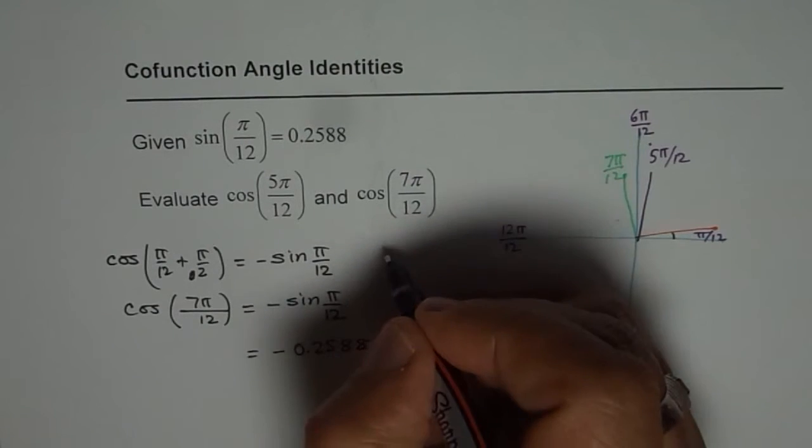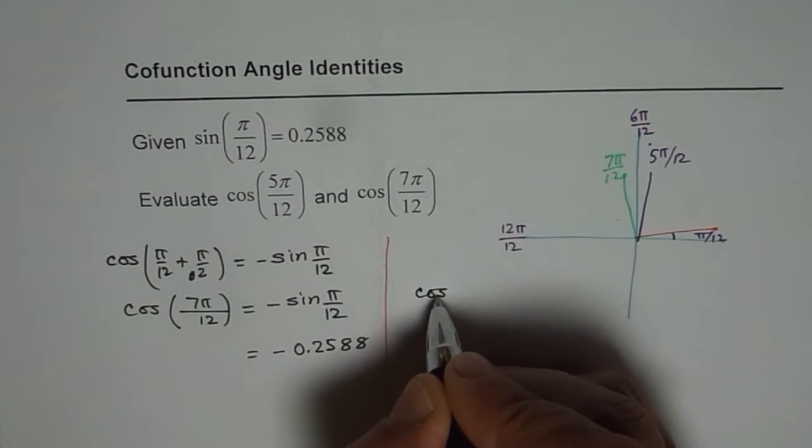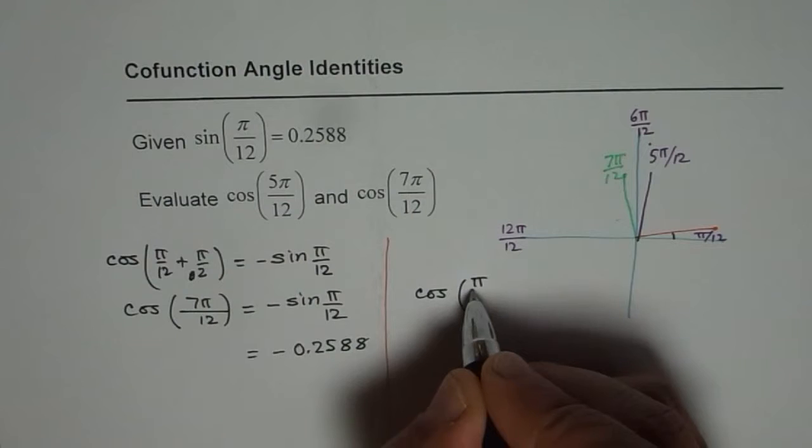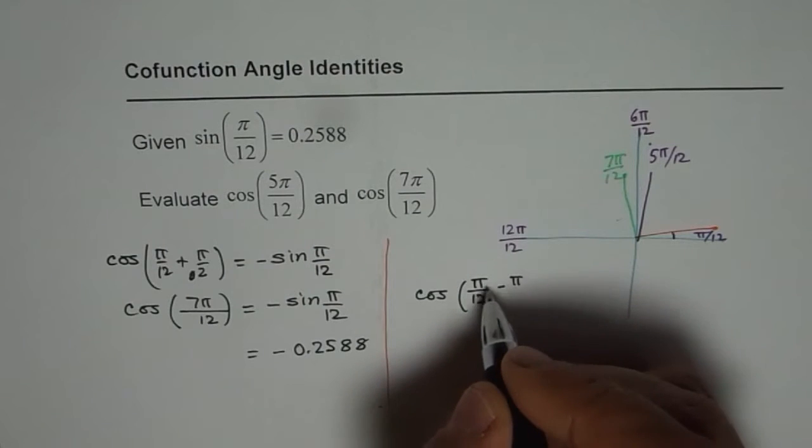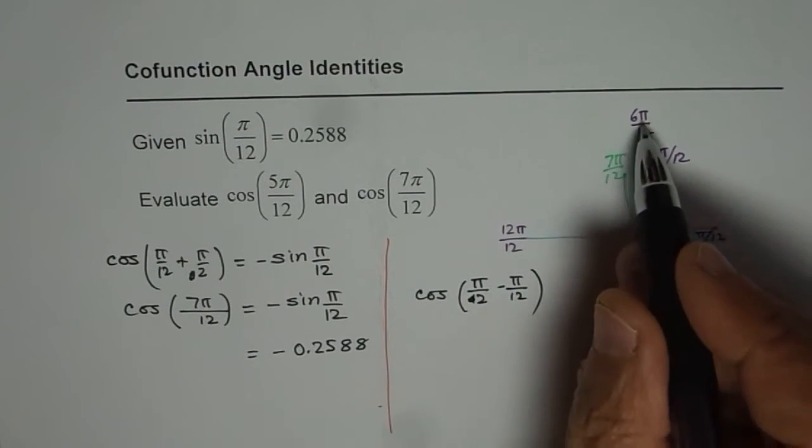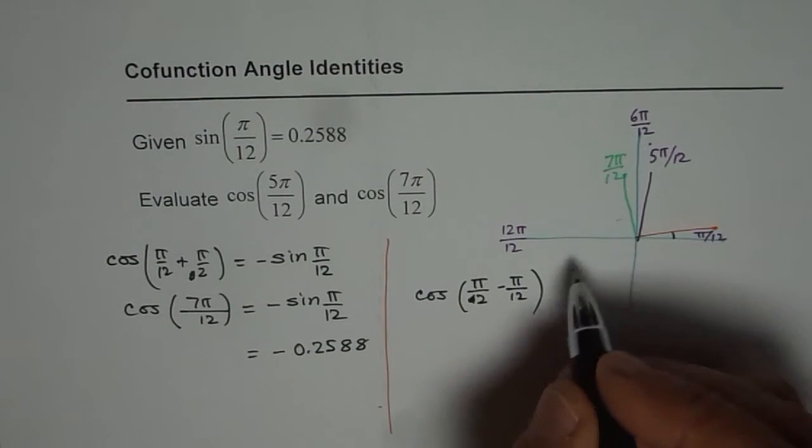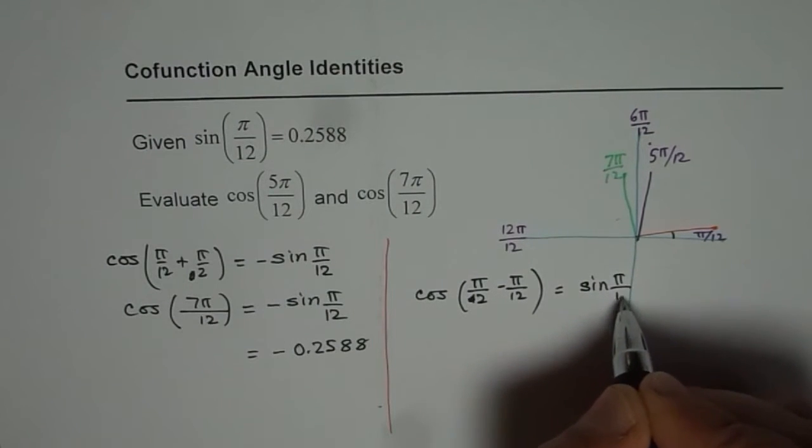Now let us also calculate what is cos of π/12 minus π/12. I should say π/2 minus π/12. π/12. Now since we are in quadrant 1, it should be equal to sin of π/12.